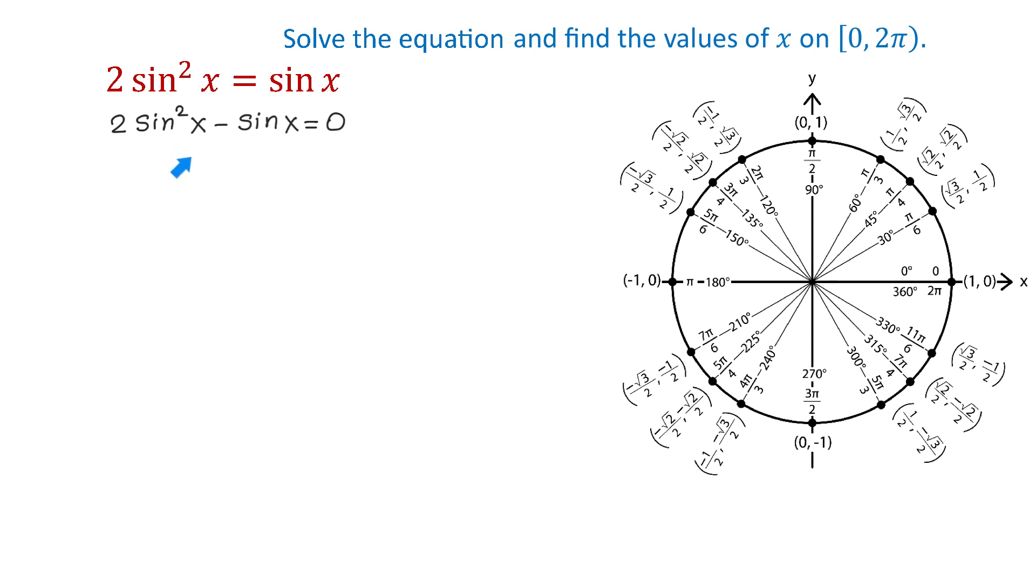And now because both these terms contain sine of x we will factor it out. And we will have sine of x times 2 sine of x minus 1 equals 0. And now we have a product and this product is 0. So then we will use the zero product property to set each of these factors equal to 0. So we will write that sine of x equals 0 or 2 sine of x minus 1 equals 0.